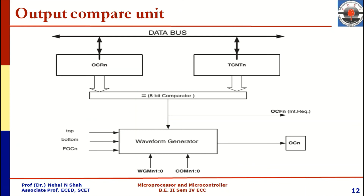The second part of the timer counter block is the output compare unit. In this unit, the OCR and TCNT registers are compared using an 8-bit comparator. As a result of comparison, the OC flag is generated and a signal is given to the waveform generator. The waveform generator uses 2 bits of the waveform generation mode from the TCCR register, and it also uses the COM bits — a 2-bit signal from the TCCR register. Based on the top, bottom, and FOC0 signal from the TCCR register, along with the waveform generation mode, waveforms are generated and made available on the output compare pin of the microcontroller.